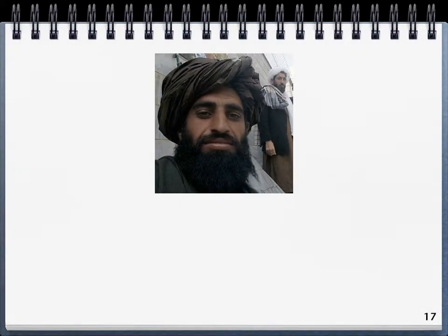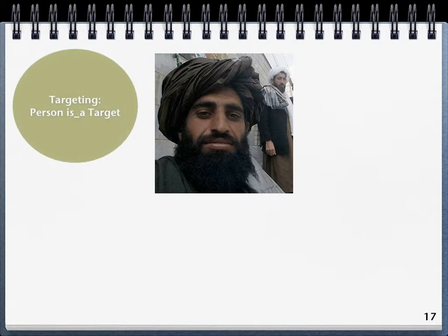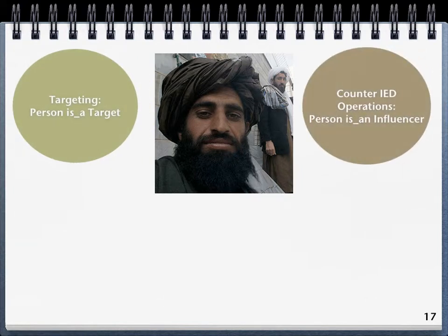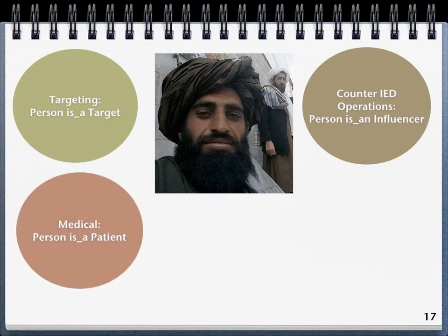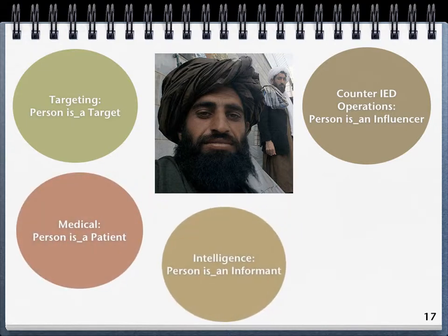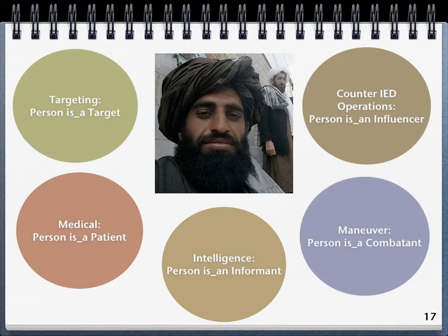Imprecise or idiosyncratic descriptions will always lead to a stovepipe lexicon where, for example, a person would be defined as a target in one stovepipe while being defined as an influencer, a patient, an informant, or a combatant in other stovepipes.